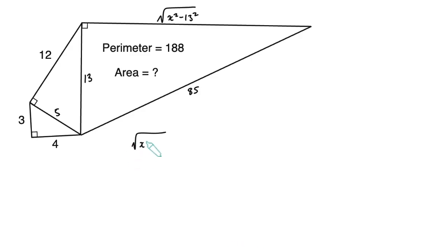Now I said at the start, we're going to do this as a non-calculator question. So to work out the length of the side, the square root of X squared minus 13 squared, we want to substitute in what we know as X, which is 85, and think about the square root of 85 squared minus 13 squared.